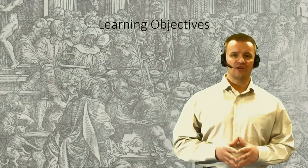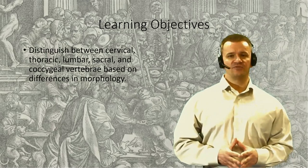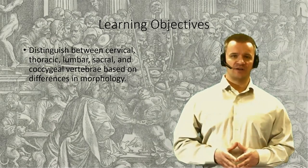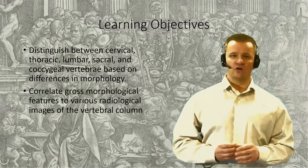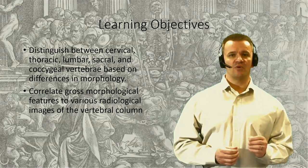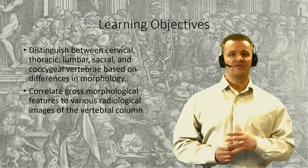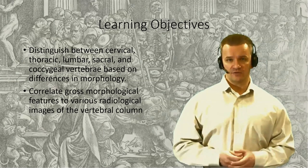Welcome back to the second session on the vertebral column. Having discussed the structure of a typical vertebrae, we now turn our attention to the structural differences between these regions. Our learning objectives for this session are to distinguish between the five principal types of vertebrae and learn how to classify a given vertebrae based on its morphological characteristics. Second, we'll take our first look at radiographic images, a branch of medicine critically important to many future careers, and gain experience identifying morphological structures of vertebrae in radiographs.